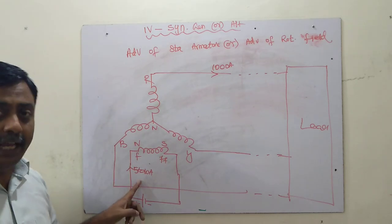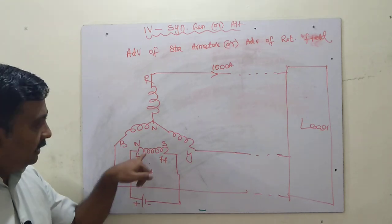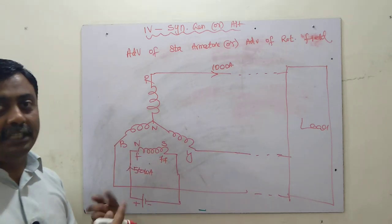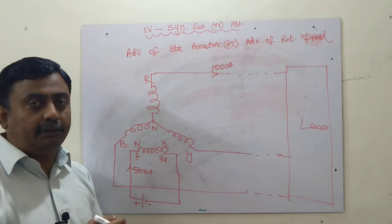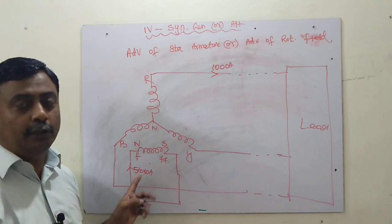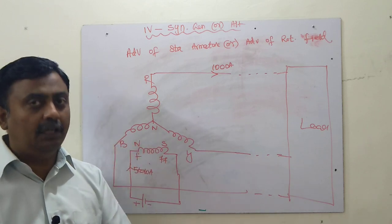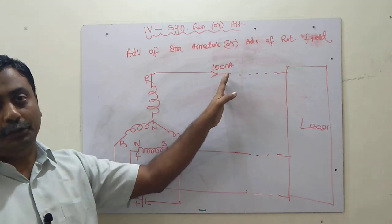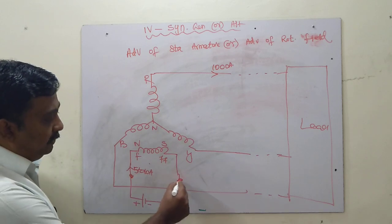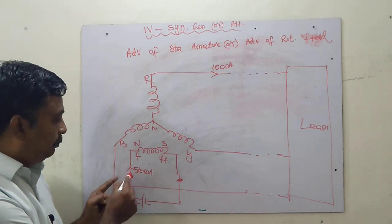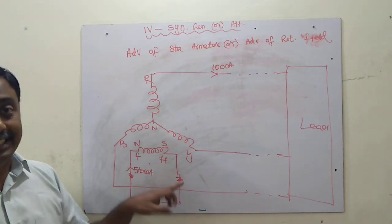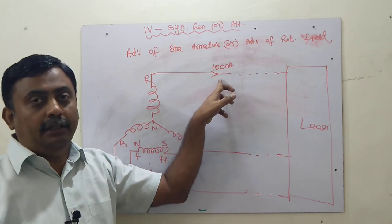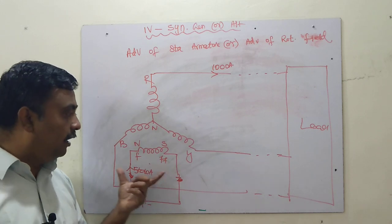If the armature is rotating, we cannot directly tap the energy; we need slip rings and brushes. For such high current, the sparking would be severe. Instead, by making the field the rotating part and giving it only 5 amps via slip rings and brushes, the slip ring and brush assembly size will be small and sparking will be minimal. That is the main reason we go for a stationary armature.